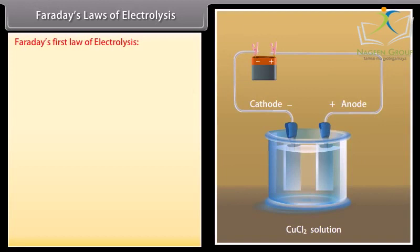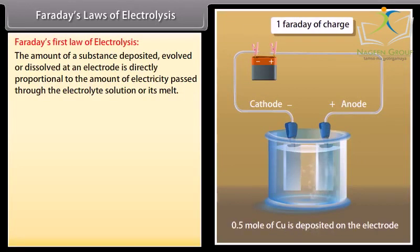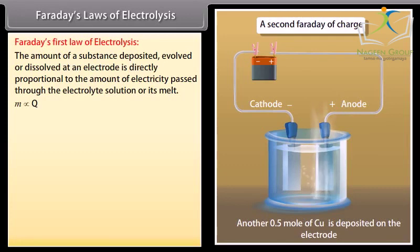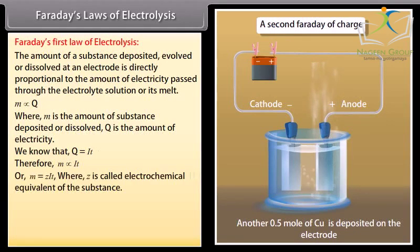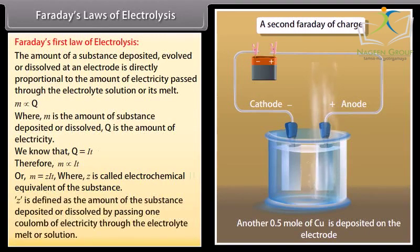Faraday's laws of electrolysis. Faraday's first law of electrolysis: The amount of a substance deposited, evolved, or dissolved at an electrode is directly proportional to the amount of electricity passed through the electrolyte solution or its melt. M is directly proportional to Q, where M is the amount of substance deposited or dissolved, Q is the amount of electricity. We know that Q is equal to I T. Therefore M is directly proportional to I T. It can be written as M is equal to Z I T, where Z is called electrochemical equivalent of the substance. Z is defined as the amount of the substance deposited or dissolved by passing one coulomb of electricity through the electrolyte melt or solution.